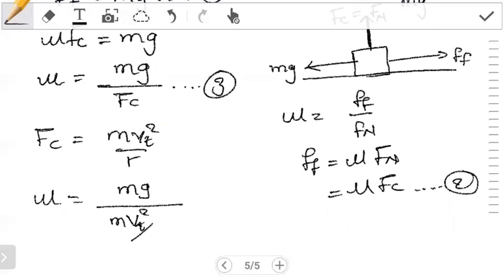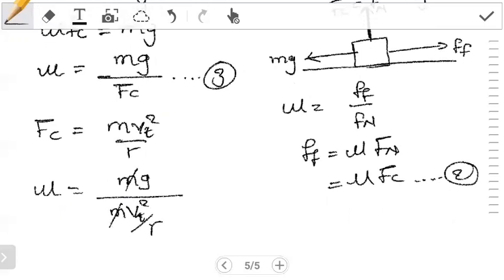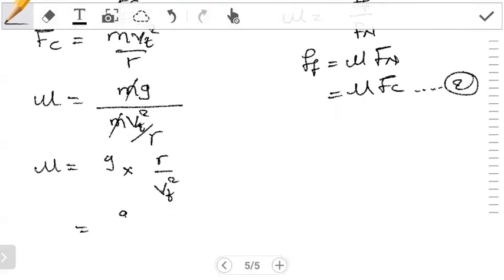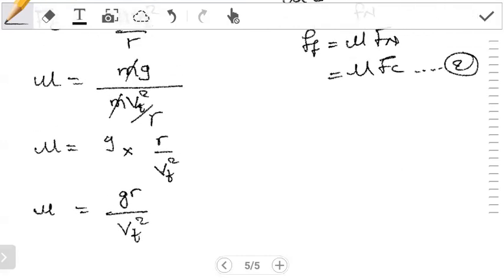What we see now is we have mu is equal to mg over this is m vt squared over r. The masses cancel out, and then mu now becomes equal to g over, we can do it step-by-step, so it's g multiplying, we want to change the division into multiplication, so this becomes r over vt squared. So this now is mu is equal to g r over vt squared.